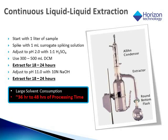Continuous liquid-liquid extraction consumes 300 to 500 milliliters of extraction solvent and requires a double extraction — once with the sample adjusted to pH 2, and a second extraction with the same sample adjusted to pH 11. Each pH adjustment step requires 18 to 24 hours, meaning that the sample preparation time can take from 1.5 to 2 days.